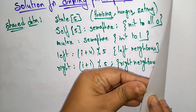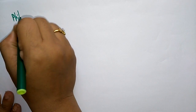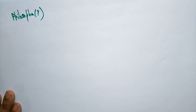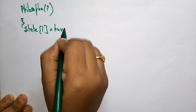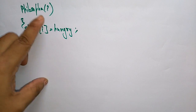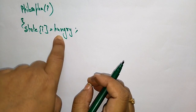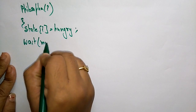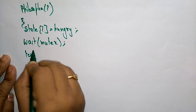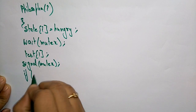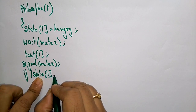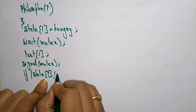Now let me write the solution for the dining philosopher problem. I am taking philosopher i. First I am writing the code and then I will explain it. State[i] is set to HUNGRY — the philosopher may be philosopher zero or any one. Whenever the philosopher is hungry, he has to call wait(mutex) and then call the function test(i), then signal(mutex). If state[i] is not equal to EATING, he is not eating.